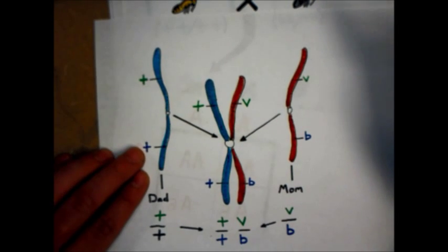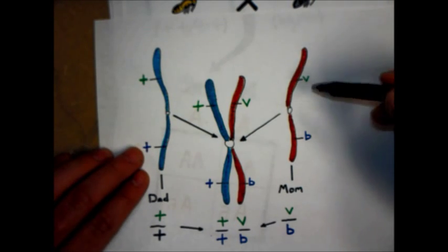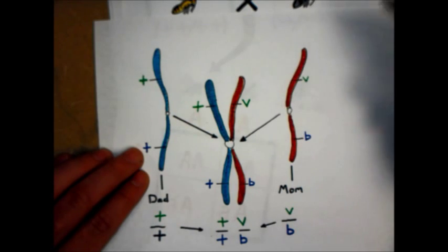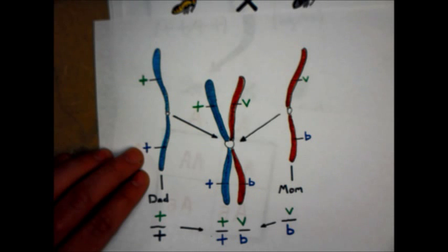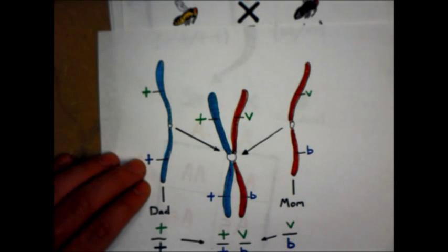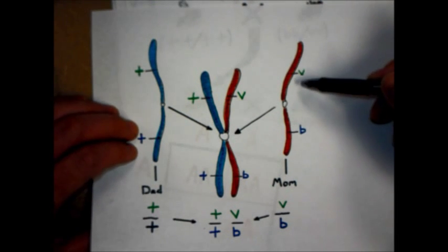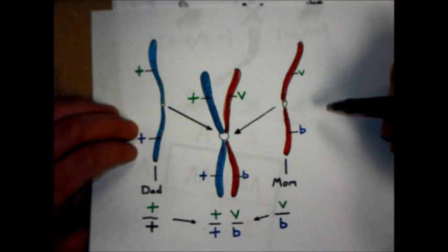Now, Thomas Morgan is thinking, if these alleles are located on the chromosomes, while there's a lot of inheritable traits, these flies only have four chromosomes. So, some of these traits are going to end up being on the same chromosome. Which means, some of these mutations might end up being on the same chromosome.